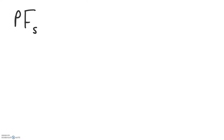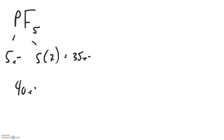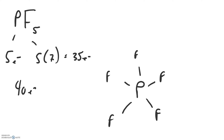Let's try another one — phosphorus pentafluoride. Phosphorus has five electrons in the valence. We have five fluorines and they each have seven, for a total of thirty-five. So altogether we have forty electrons in the valence. As usual, we put the one we have fewest of in the middle. We skeleton by bonding a fluorine to the phosphorus for each of the five fluorines, using up two electrons per bond — that's ten electrons used up in bonding — leaving thirty electrons remaining.